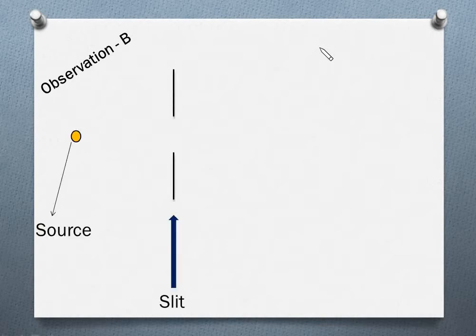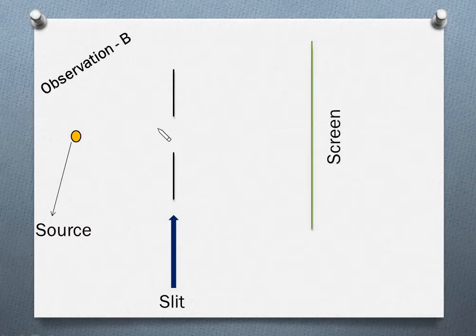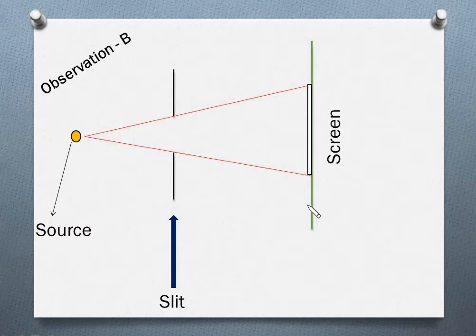Now we will repeat the same kind of experiment with a slightly smaller opening of the slit. Let's call it Observation B. Again we have a light source and a slit, but now the width of the opening is small compared to the earlier case. Again light moves in a straight line and we will have an image here, with dark spaces on either side.